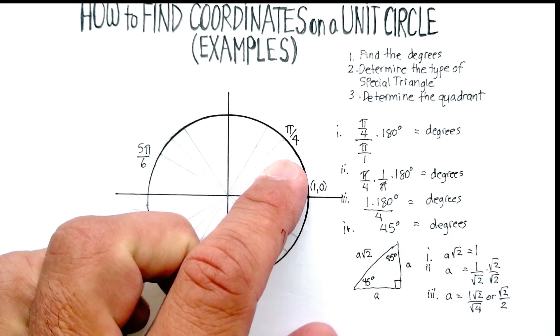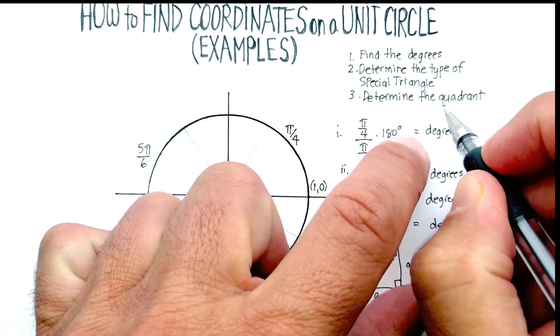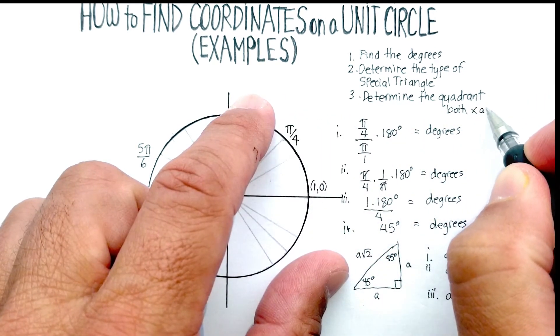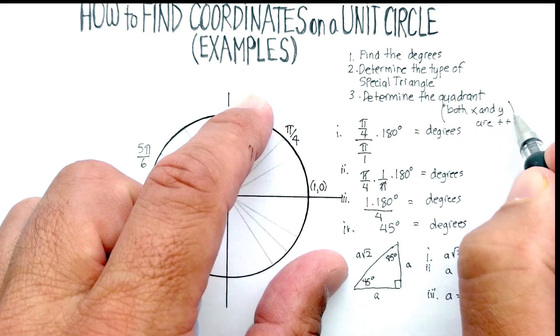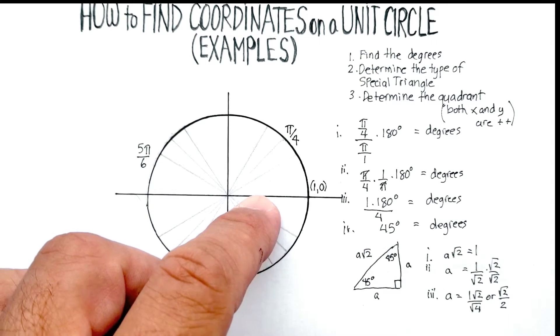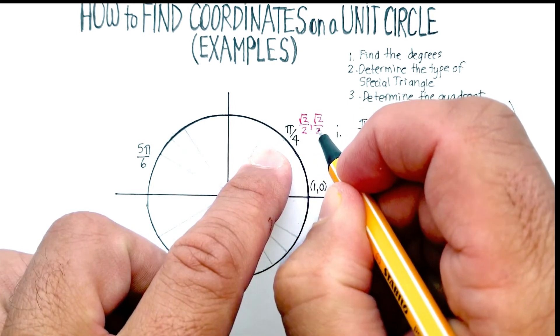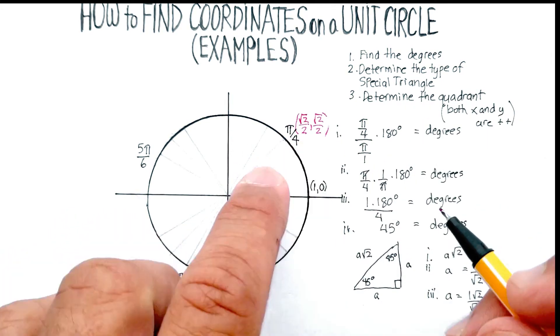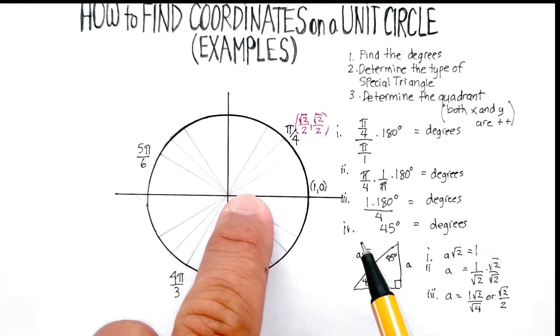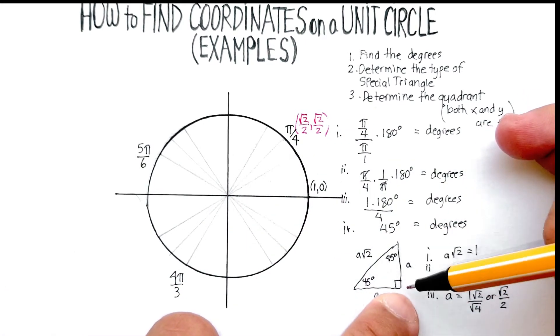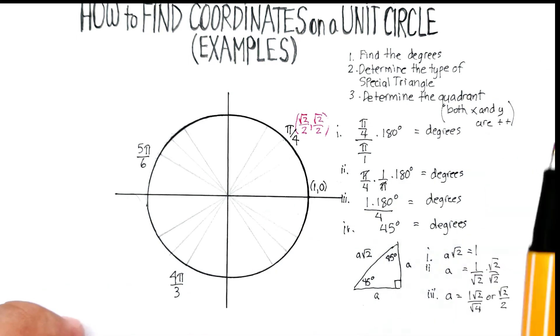Now, the third thing we want to do is notice which quadrant we're in. And remember, since we're in the first quadrant, both the x and the y values are positive. So we're going to make x √2 over 2 positive, and the y √2 over 2 is positive, and there's our coordinate at that distance. Remember, this value is just the distance along the x-axis, and this distance is the distance along the y-axis. And again, they're both positive.